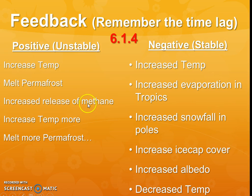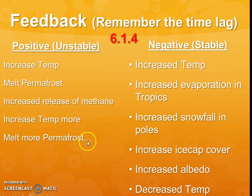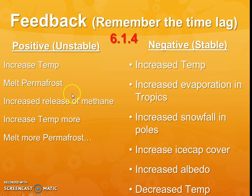Remember that methane is a really problematic greenhouse gas that has even higher global warming potential than carbon dioxide. So that methane getting released from that frozen and now melting ice is going to cause the temperature to increase even more, which further melts permafrost, further releasing methane, further increasing temperature. If you were to draw this, it would be a cycle that's continuing to spiral out of control, away from equilibrium.